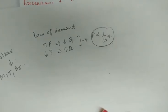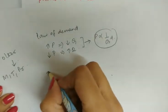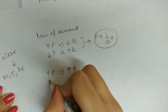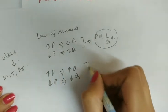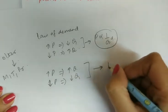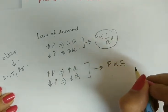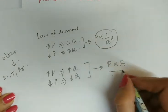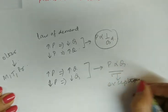In day-to-day life, we come across situations such that more of a commodity is demanded at a higher price and less of the commodity is demanded at a lower price. This is a situation where price and quantity are directly related to each other, and such a situation is called the exception to the law of demand.